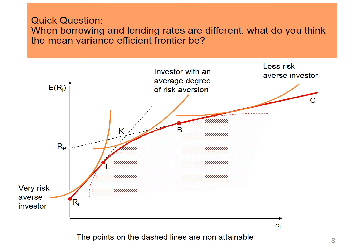Now let's combine the capital allocation line with the efficient frontier and different levels of investor utility. In this graph, our capital allocation line with different borrowing and lending rates is labeled RL, L, K, B, C. There are three types of investors: a very risk-averse investor, an investor with an average degree of risk aversion, and a less risk-averse investor. There are three utility curves in the graph. The points on the dashed lines are non-attainable. Therefore, the mean-variance efficient frontier is RL, L, B, C.